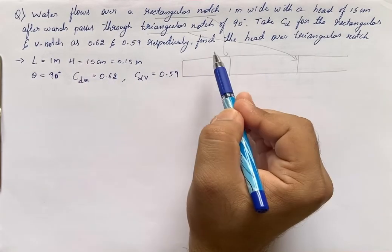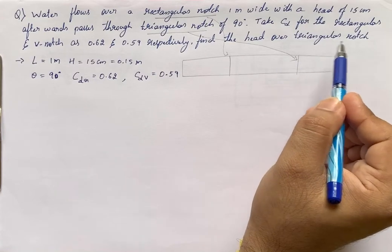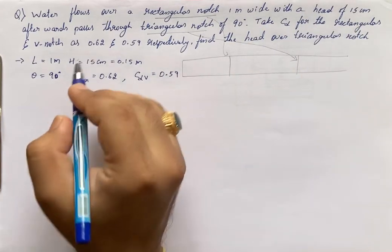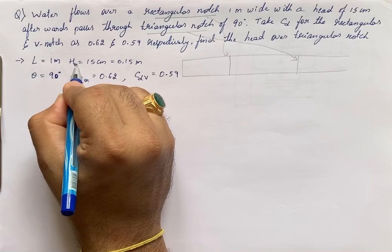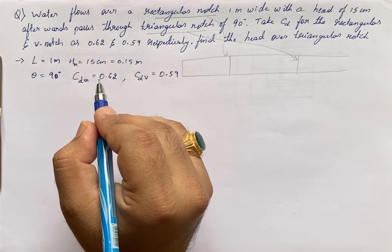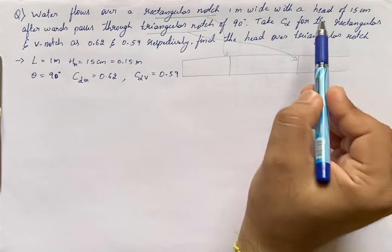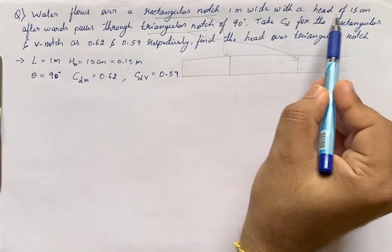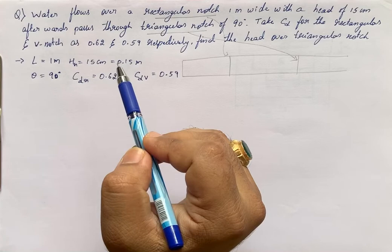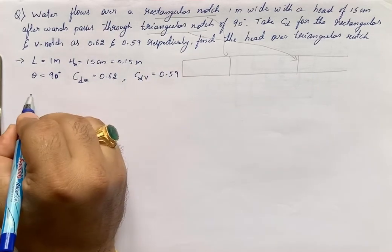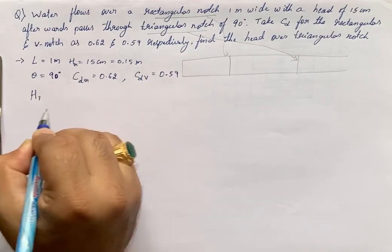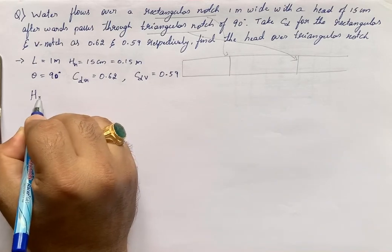He has asked: find the head over the triangular notch. The head of 15 centimeter given is for the rectangular notch itself. We need to find the head for the triangular notch or v-notch.